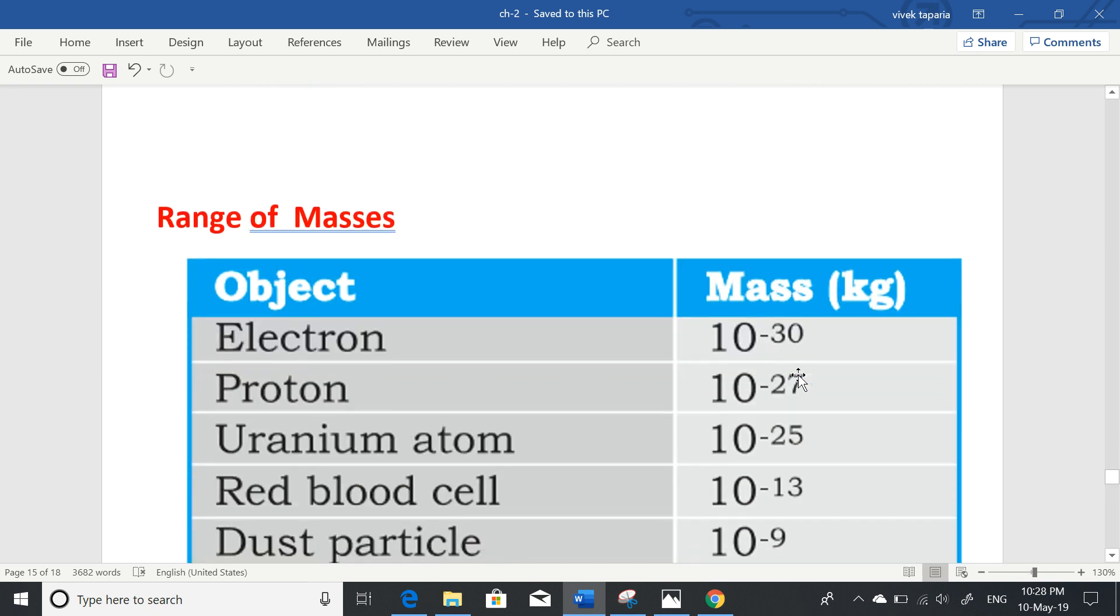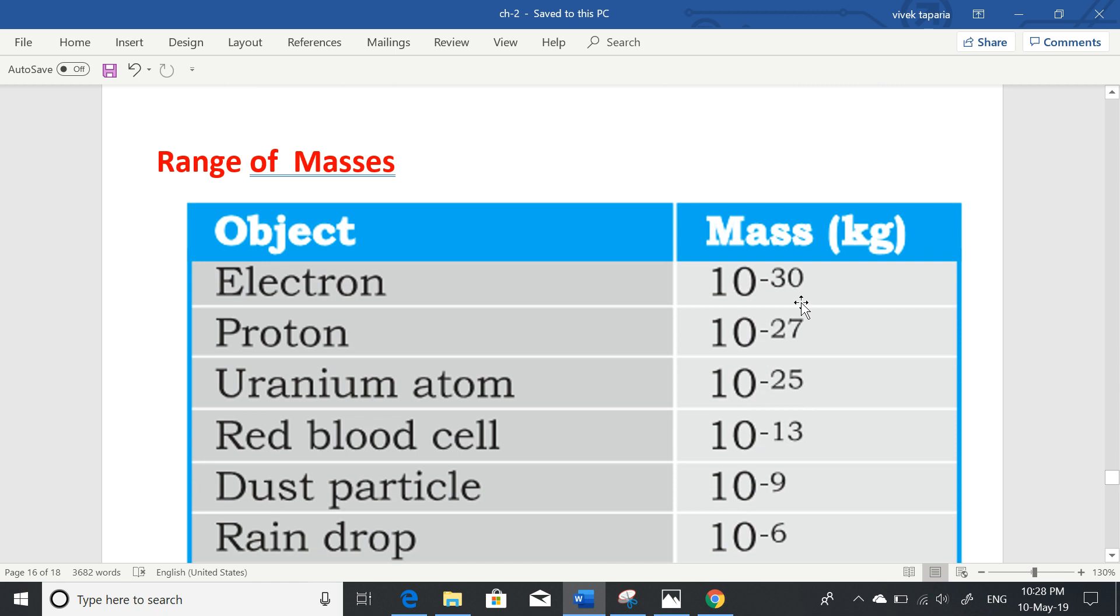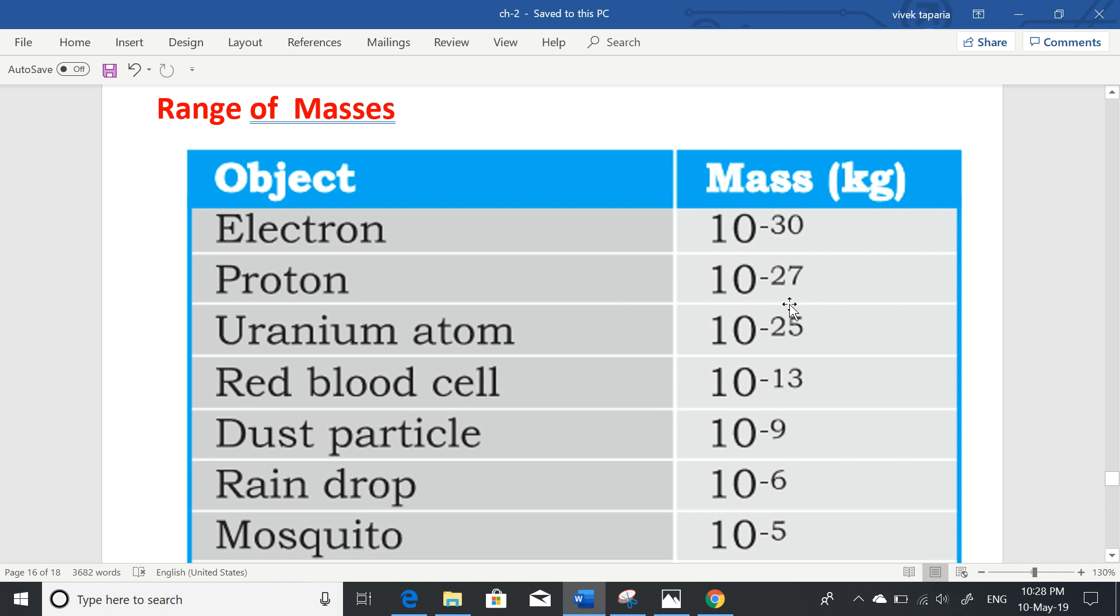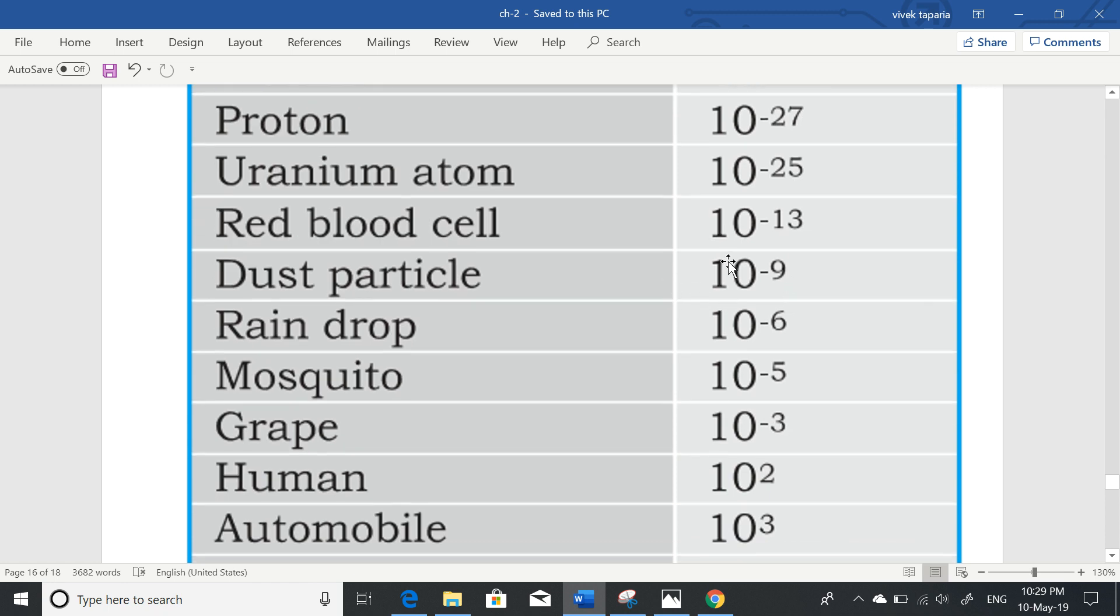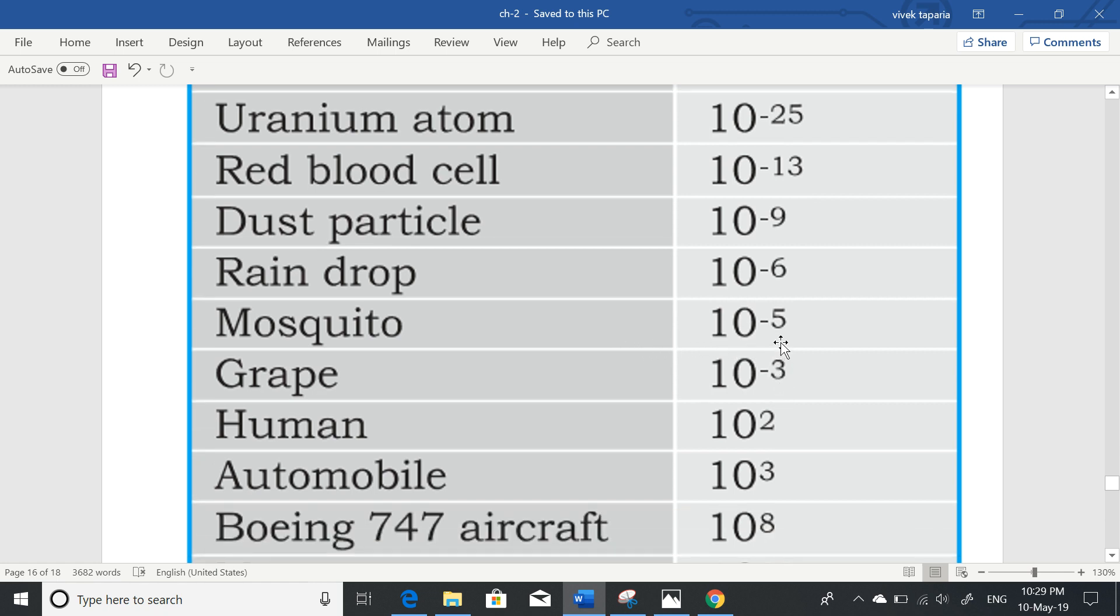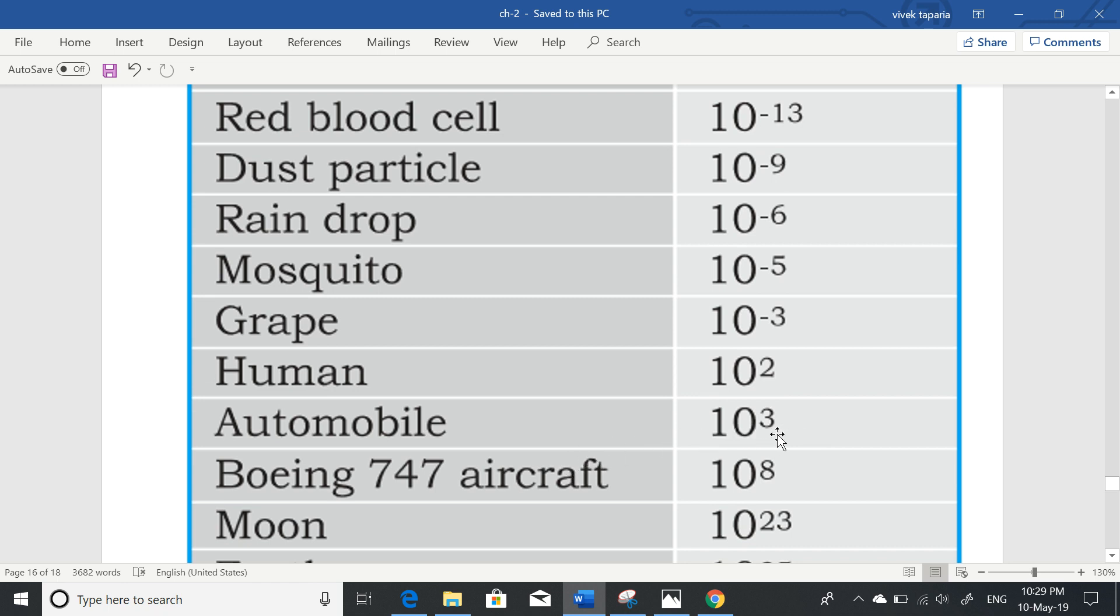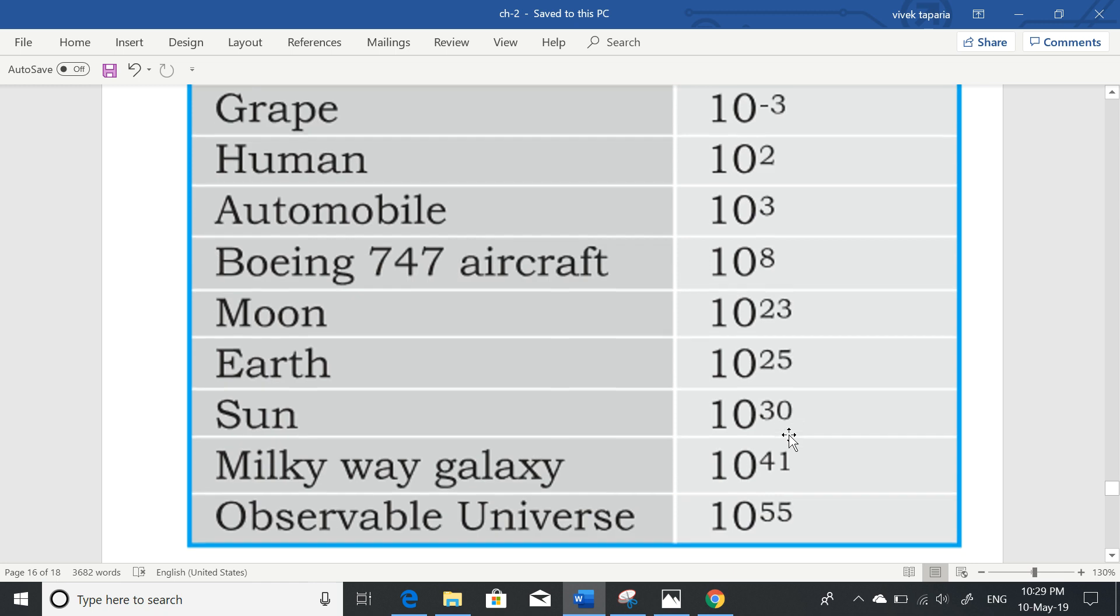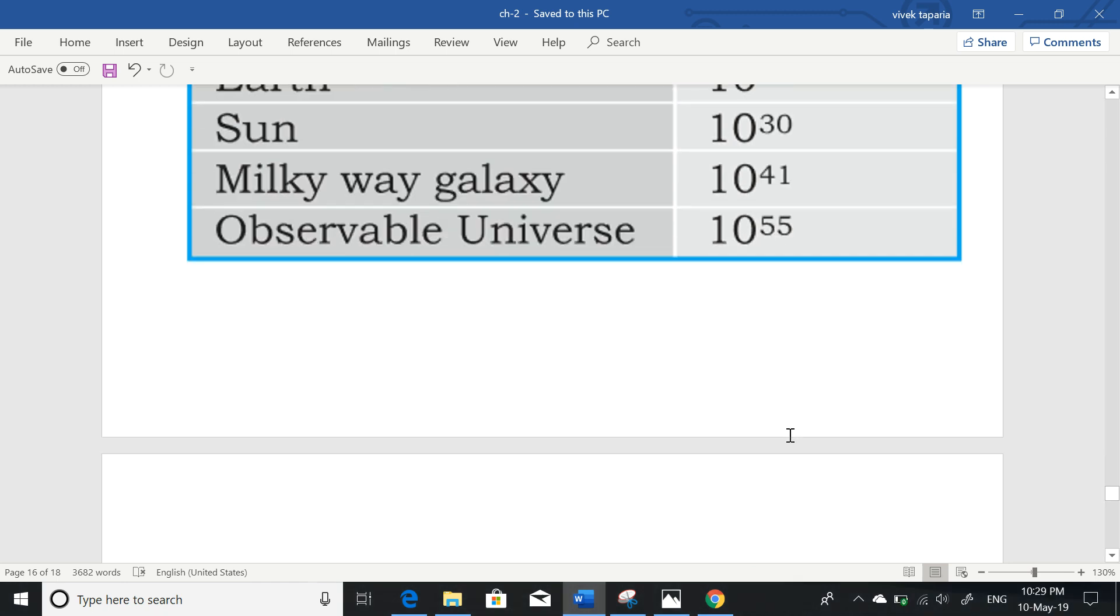Mass of electron order of 9.1×10⁻³¹ to 10⁻³⁰. Proton 10⁻²⁷, uranium atom 10⁻²⁵, red blood cell 10⁻¹³, dust particle 10⁻⁹ kg, raindrop 10⁻⁶, mosquito 10⁻⁵, grape 10⁻³ kg, human 10² kg, automobile 1000 kg, Boeing 747 jumbo jet 10⁸ kg, moon 10²³, earth 10²⁵, sun 10³⁰, milky way galaxy 10⁴¹, and observable universe 10⁵⁵.